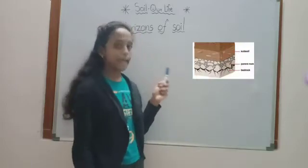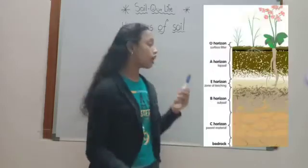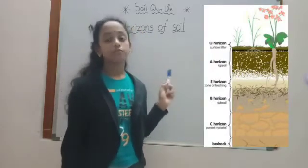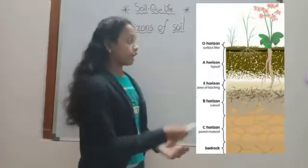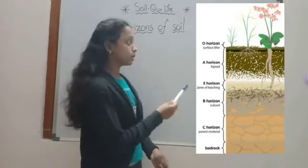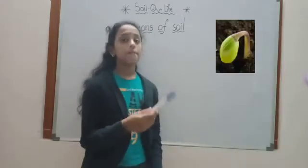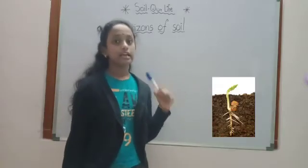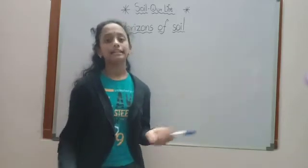The layers include subsoil, regolith, and bedrock. The O-horizon is the top organic upper layer of soil, made up of mostly leaf litter and humus. The A-horizon is also called topsoil. It is found below the O-horizon and above the E-horizon. Seeds germinate and plants grow roots in these dark colored layers. It is also made up of humus mixed with mineral particles.